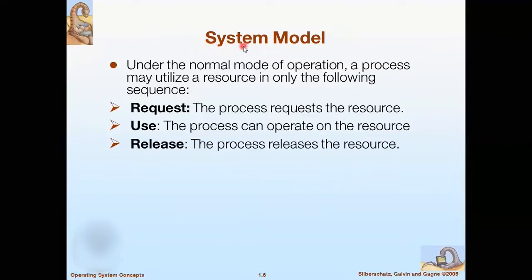In this entire chapter we say that every process should follow the system model. The system model is a three-step process. The first step is request — the process requests the resources. Every process will request a resource, since a system consists of a finite number of resources distributed among competing processes, and all processes must request a resource before using it. The second step is use — if the request is granted, then the process will use the resource.